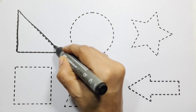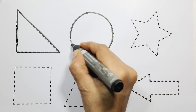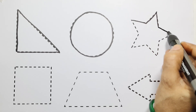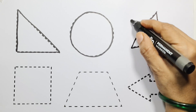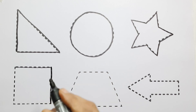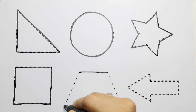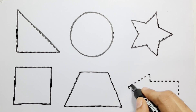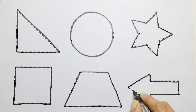Right Triangle. Circle. Star. Square. Trapezoid. Arrow. Now we will color.